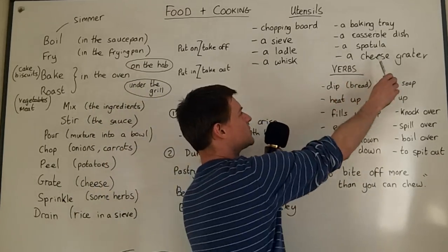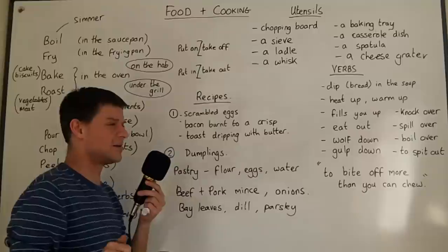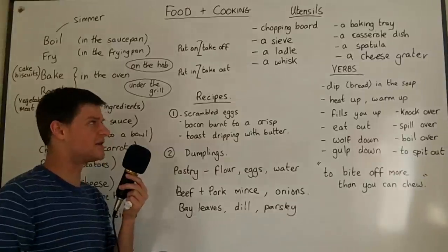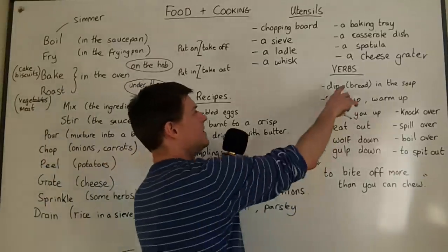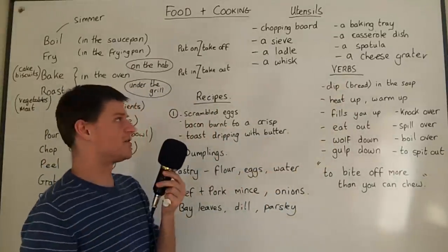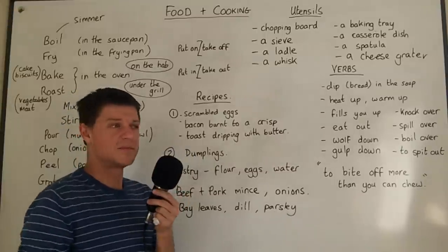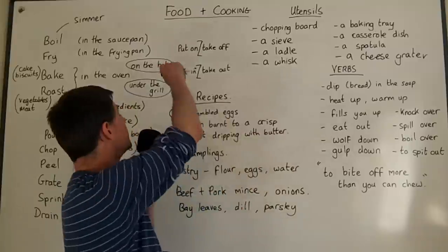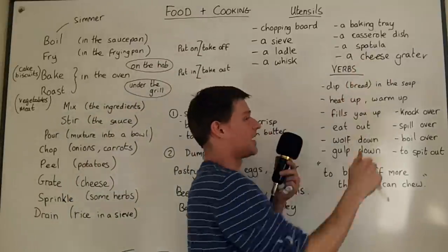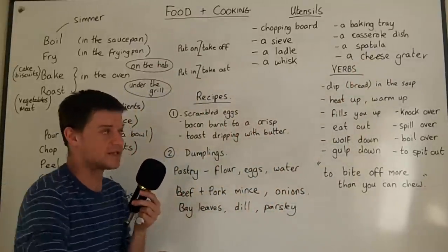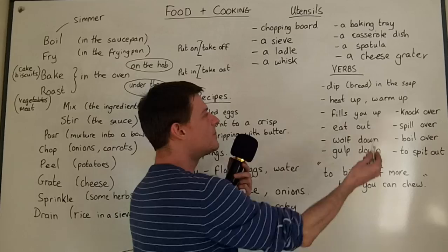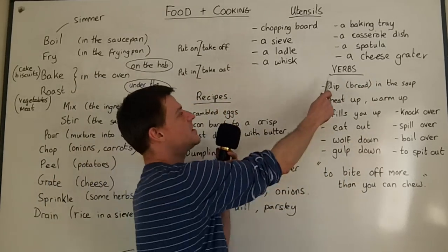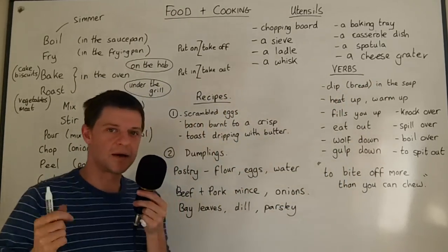A spatula — in the UK it's sometimes called a fish slice or an egg slice. My brother and I always called it a burger flipper when we were younger, because that's mostly what we used it for. You use the spatula when frying eggs to move them around or take them out of the pan. And a cheese grater is used for grating cheese.